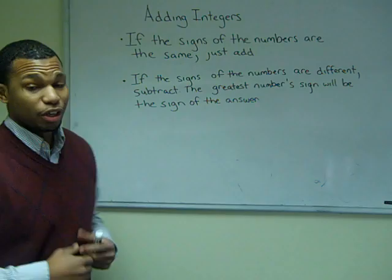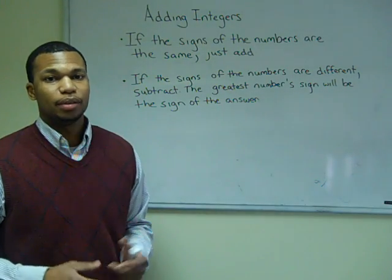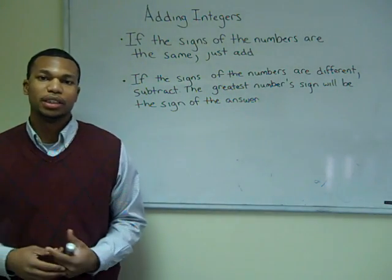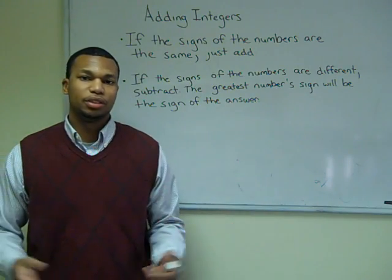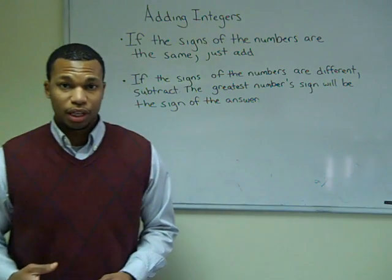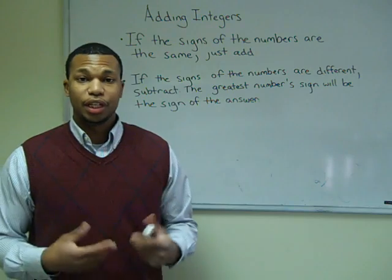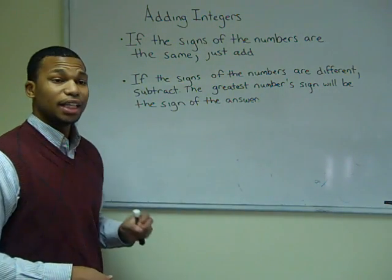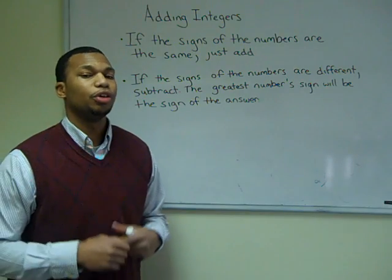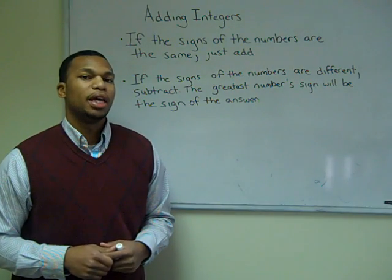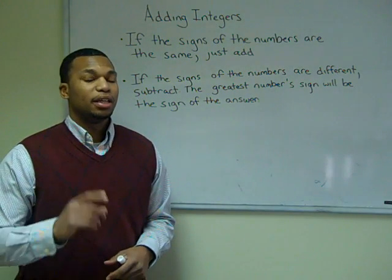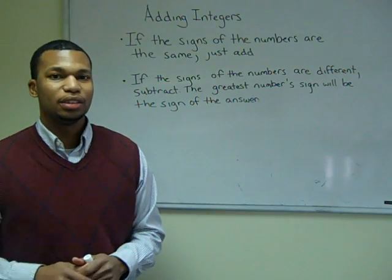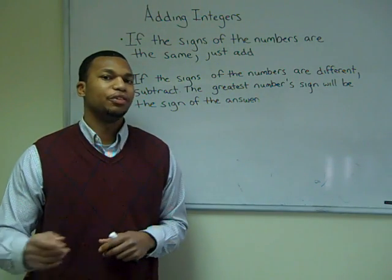First, if the signs of the numbers are the same, you just add them. That means if you have a positive and add it to another positive, you get a positive. If you add a negative to another negative, you get a negative. The second rule is: if the signs of the numbers are different, you're going to subtract. And whatever sign belongs to the greatest number, that's going to be the sign of your answer.